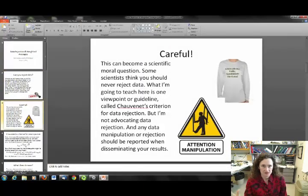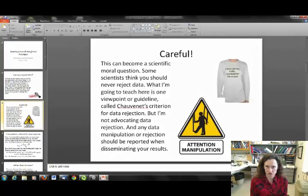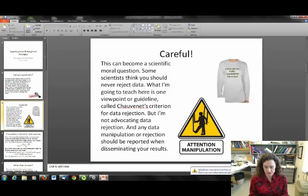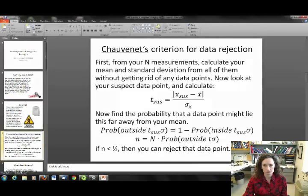This is a sort of moral question for scientists. Some scientists think that you should never reject data like that. Of course, they still believe that you can reject data if you know that you did something wrong, but they don't feel that it's right to reject data if it's data that should be fine. What I'm going to teach here is one viewpoint or guideline that is somewhat controversial and it's called Chauvenet's Criterion for Data Rejection. I'm not advocating that you reject any data. And also, if you do decide to use this or any other criterion for data rejection, then when you report your data, you should describe what you did to your data in that report. You need to say I used Chauvenet's Criterion for Data Rejection. It's very important to be honest about that kind of thing.